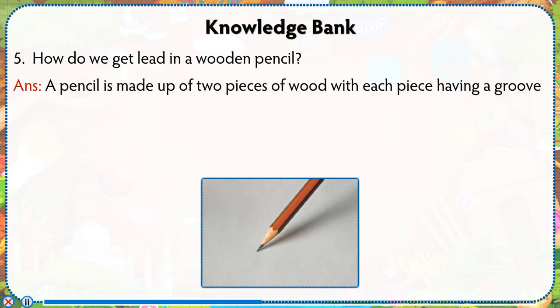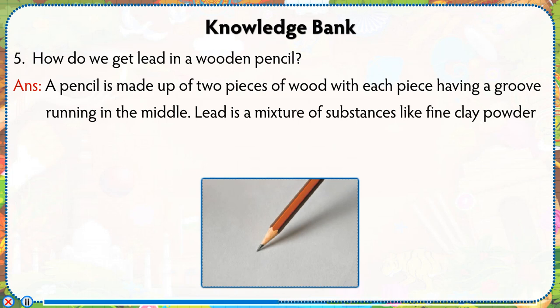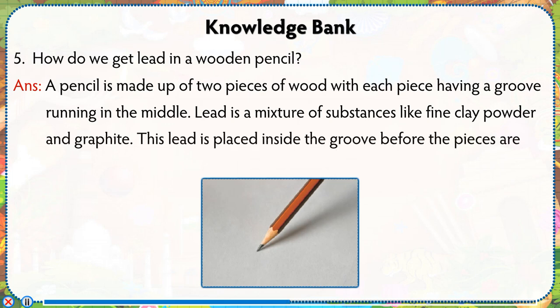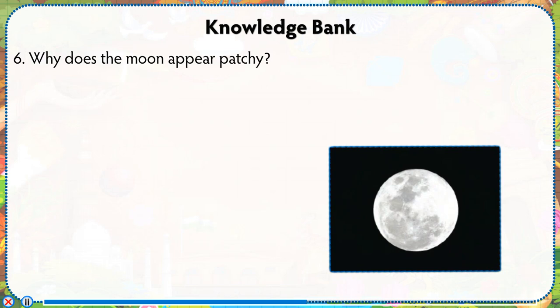How do we get lead in a wooden pencil? A pencil is made up of two pieces of wood, with each piece having a groove running in the middle. Lead is a mixture of substances like fine clay powder and graphite. This lead is placed inside the groove before the pieces are bound together.